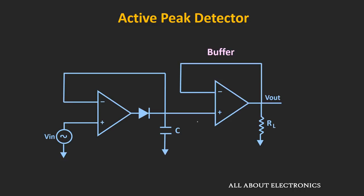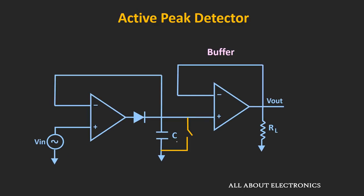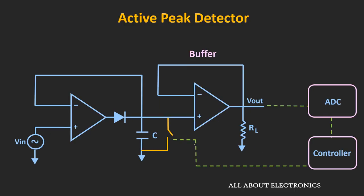In such instances, it is good to use the buffer circuit before the load resistance. This buffer circuit provides very high input impedance and it prevents this capacitor from discharging through this load resistance. If we want to reset this circuit, a switch can also be connected across this capacitor to manually discharge it. Even a transistor can be used as a switch to control the discharging of this capacitor, and the switching action of the transistor can be controlled using the controller. By using the buffer, we can avoid the discharging of this capacitor.